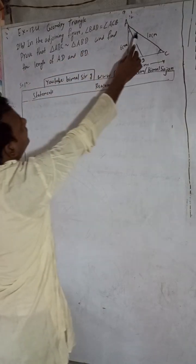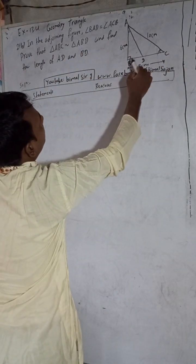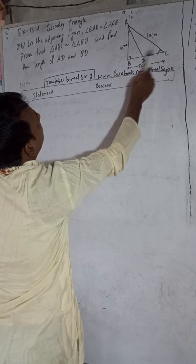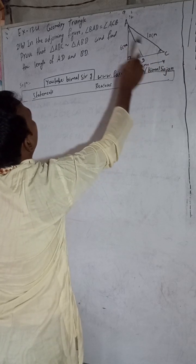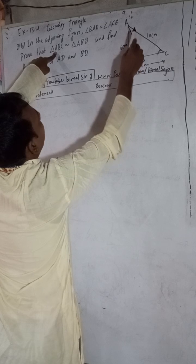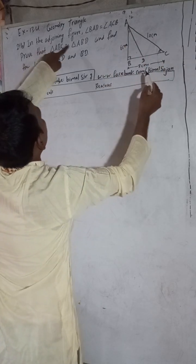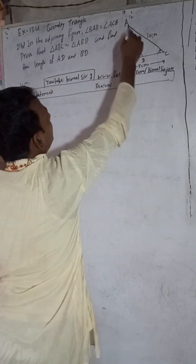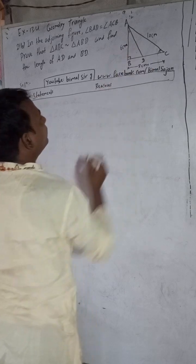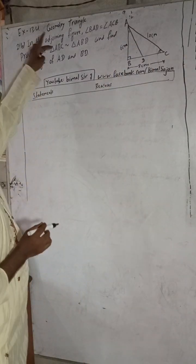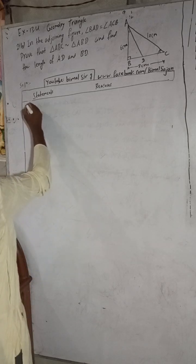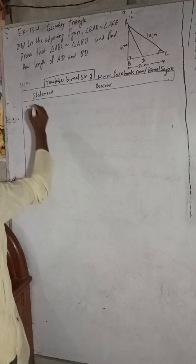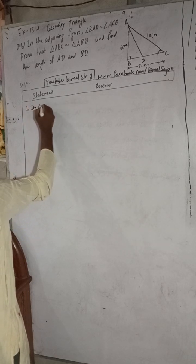In the given figure, angle BAD is equal to angle ACV. Prove that triangle ABC is equal to triangle ABD and find the length of AD and BD. So here, first step, take in triangle ABC and triangle ABD.